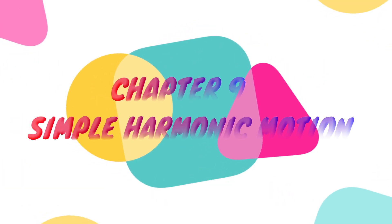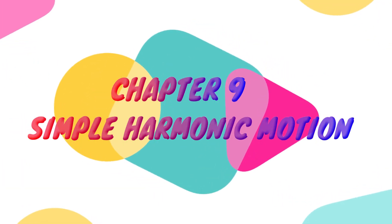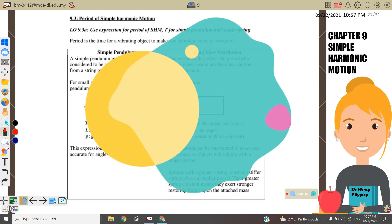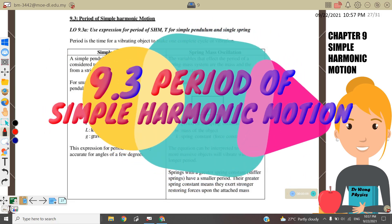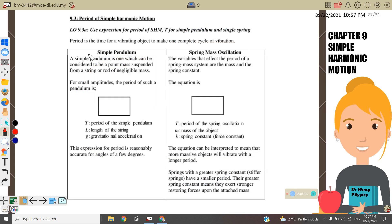Welcome back to my channel. Today we are going to continue with Chapter 9, Simple Harmonic Motion. In this video, we are going to discuss 9.3, Period of Simple Harmonic Motion. Period is the time for a vibrating object to make one complete cycle of vibration. We have two types of objects: the simple pendulum and the spring-mass oscillation.